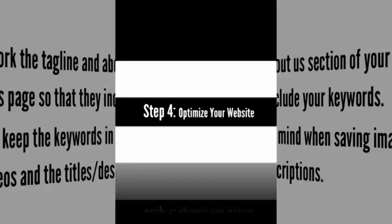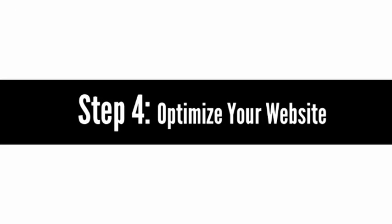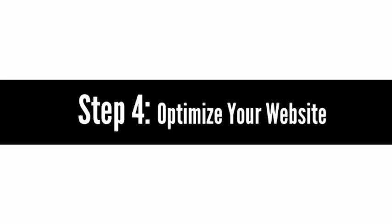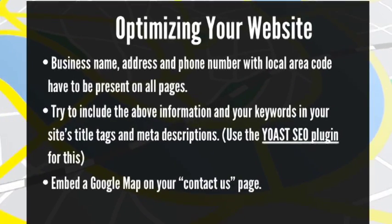Step 4: Optimize your small business website. There are a few key things with how your website is set up that you want to make sure are in place so that it ranks highly in Google's local search results. Make sure that every page of your site has your business name, address, and phone number with local area code. Make sure the information is in text and not an image so it can be seen by Google. Check Whois.com to make sure that your website is registered to your business address.